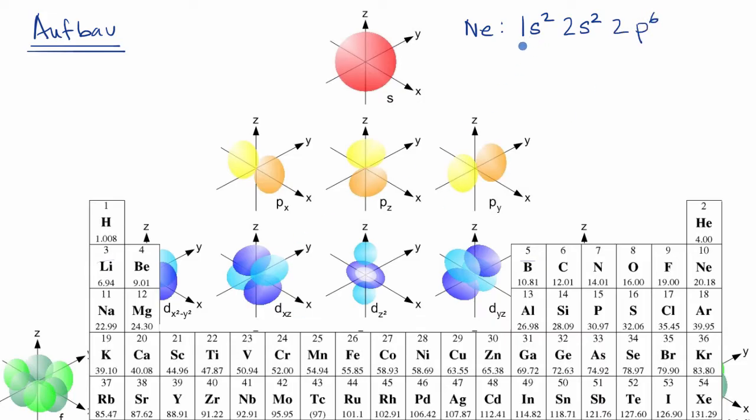What's the order of the subshells that we just filled? Well, first we filled 1s, then we filled 2s, then we filled 2p, and you can also see that in the periodic table of elements. In this first row, you're filling that first shell. In this second row, or this second period, you are filling that second shell. Now, what's going to happen if we were to go to, say, argon?